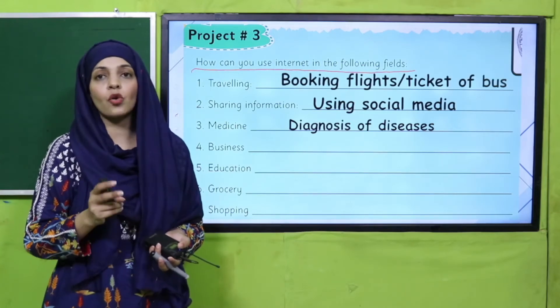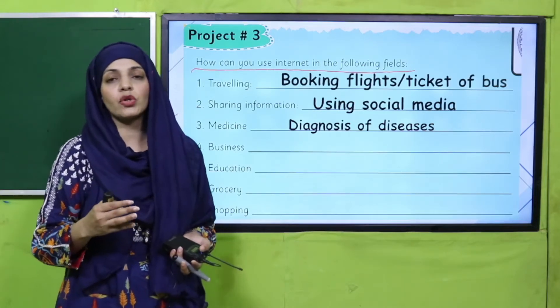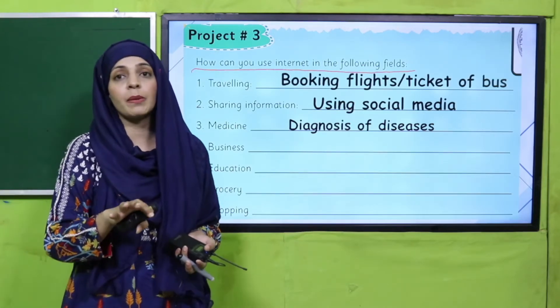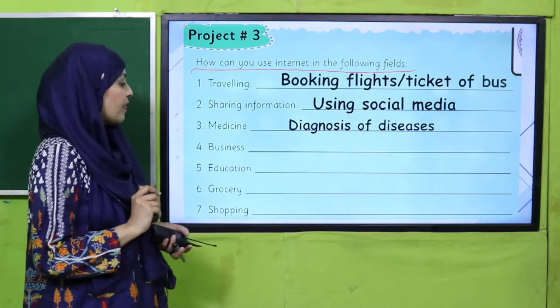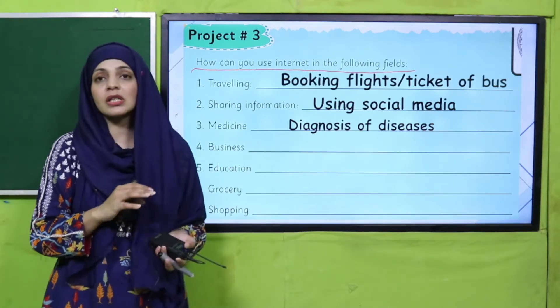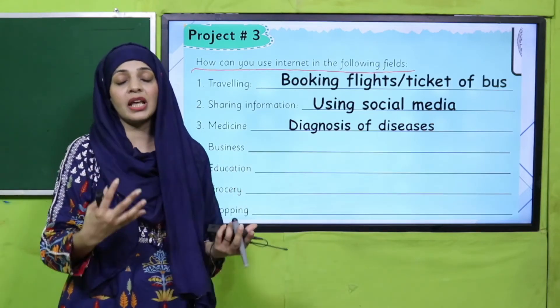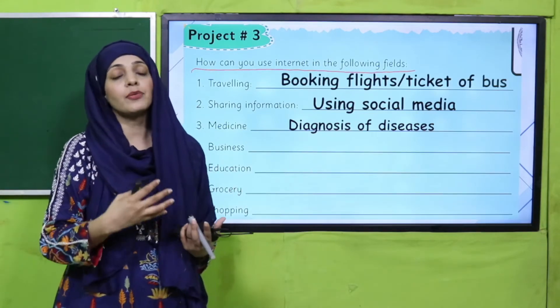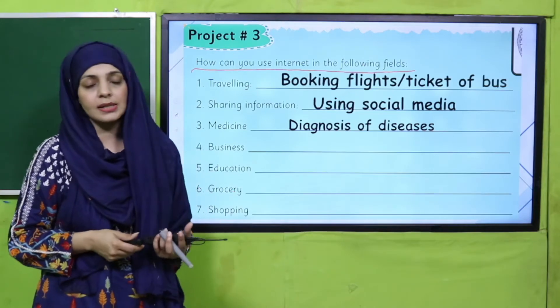Then in education, you can do research work and you can read different books online. And then for grocery, you can buy anything online — from grocery to any item that you want to purchase, it is available on the internet and you can buy it. And then for shopping — anything you want to buy or sell, you can do it through the internet.